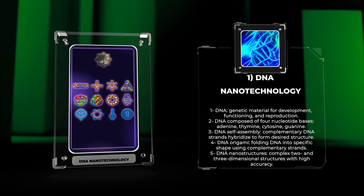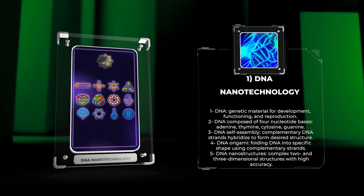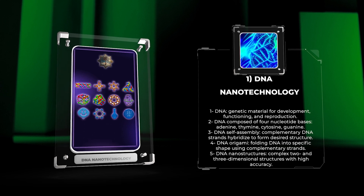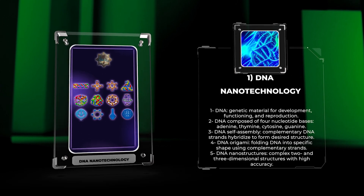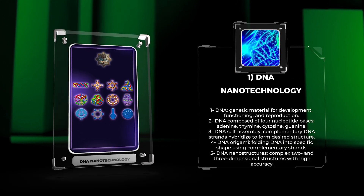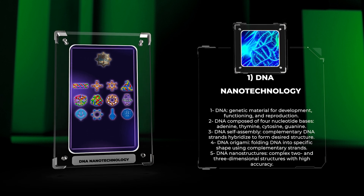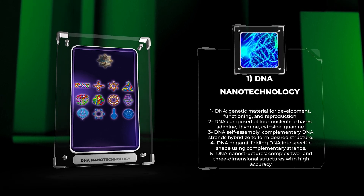DNA origami, for example, involves folding a long single-stranded DNA molecule into a specific shape by designing shorter complementary strands. This technique enables the construction of complex two- and three-dimensional nanostructures with remarkable accuracy.